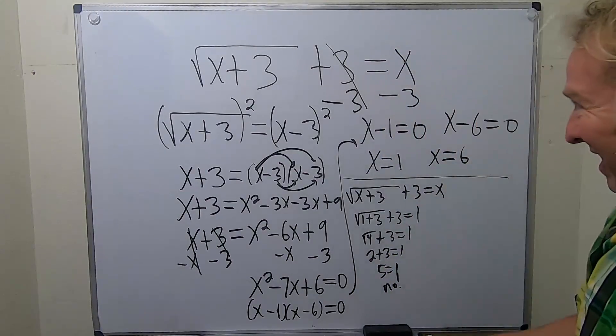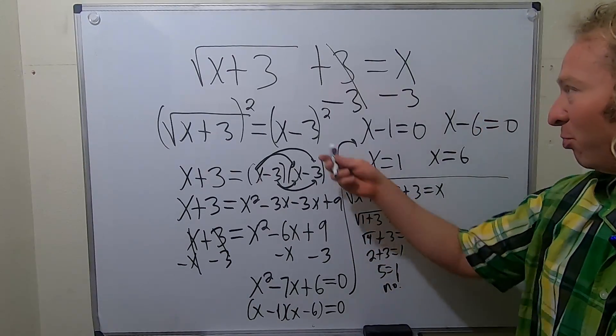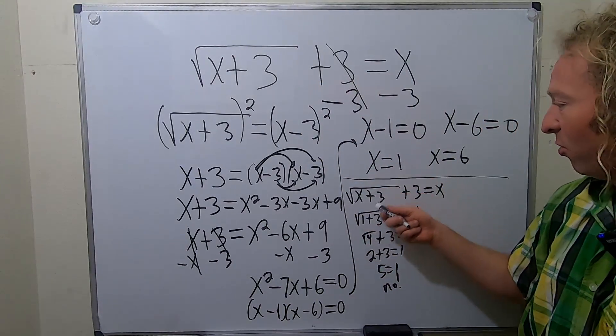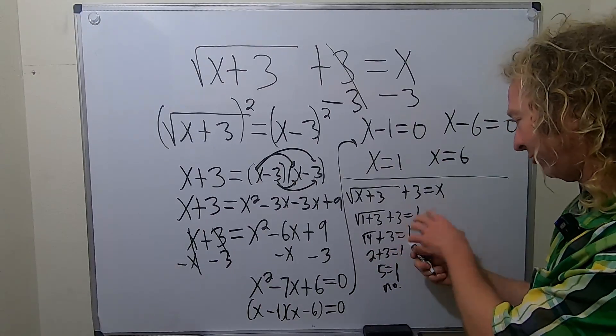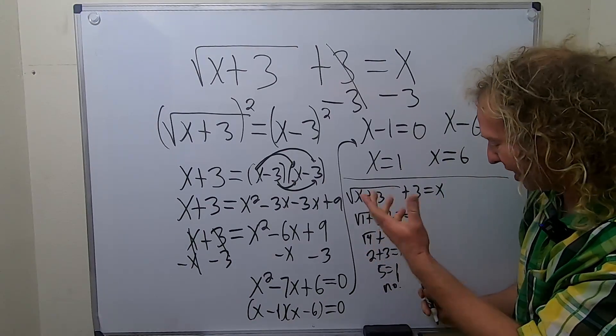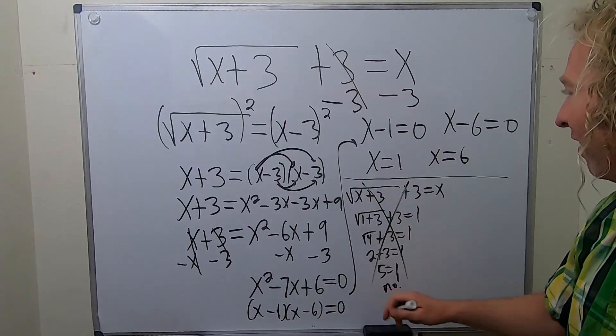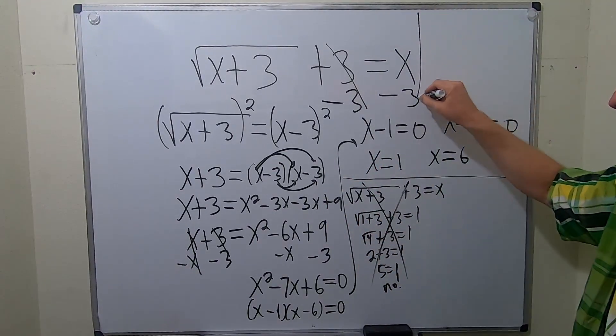Let me just check that again. We wrote this down again, we plug in the 1, so 1 plus 3 is 4. It's equal to 1, right, because x is 1. 2 plus 3, yeah it doesn't work. Fail.